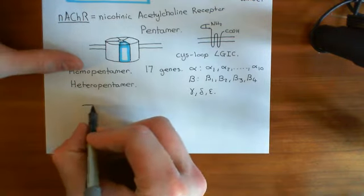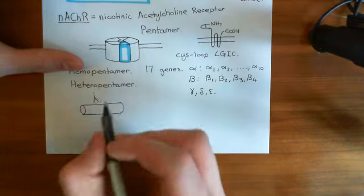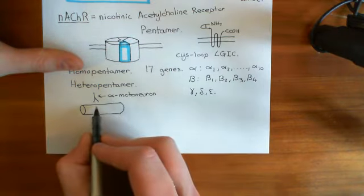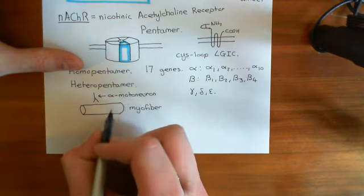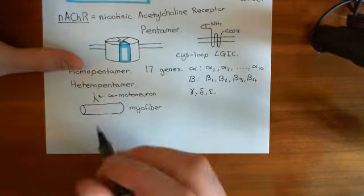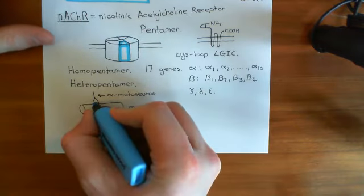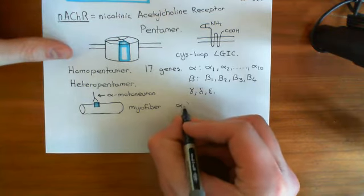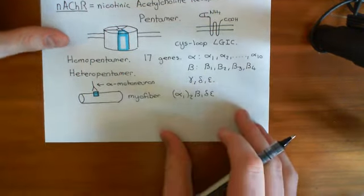If we have our skeletal myofibre — a muscle cell — the alpha motor neuron that innervates the myofibre releases acetylcholine onto it, causing the myofibre to contract. The myofibre must therefore have a nicotinic acetylcholine receptor on it. This receptor is a heteropentamer, often referred to as the alpha-1 squared, beta-1, delta, epsilon heteropentamer. This notation tells you the exact subunit composition of the receptor.